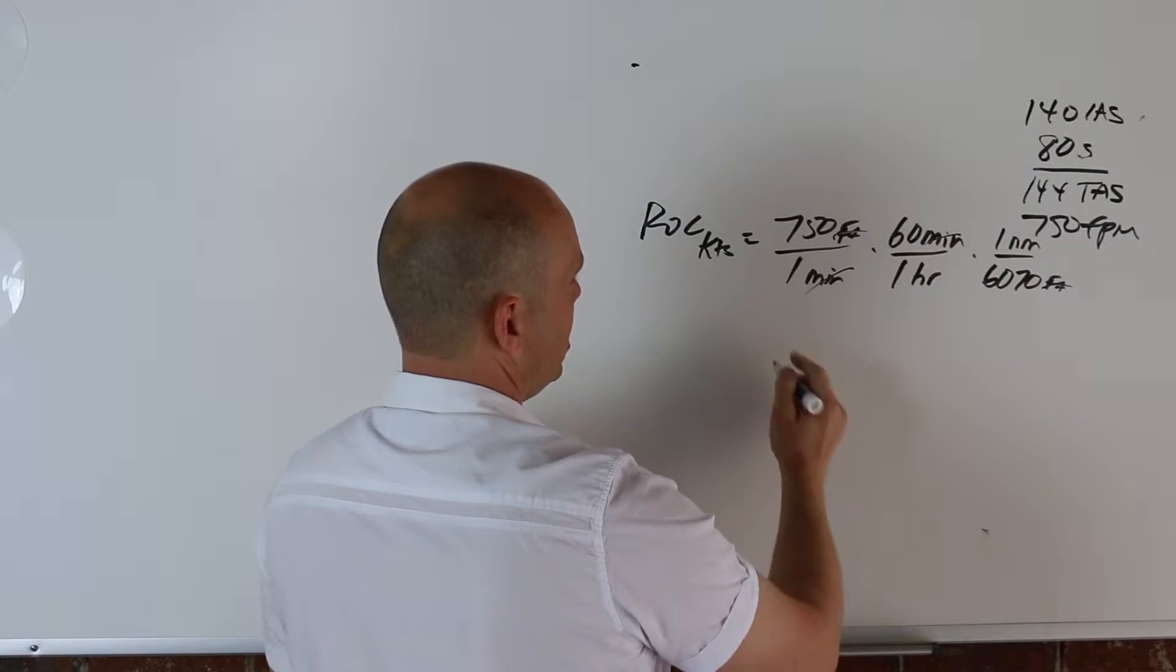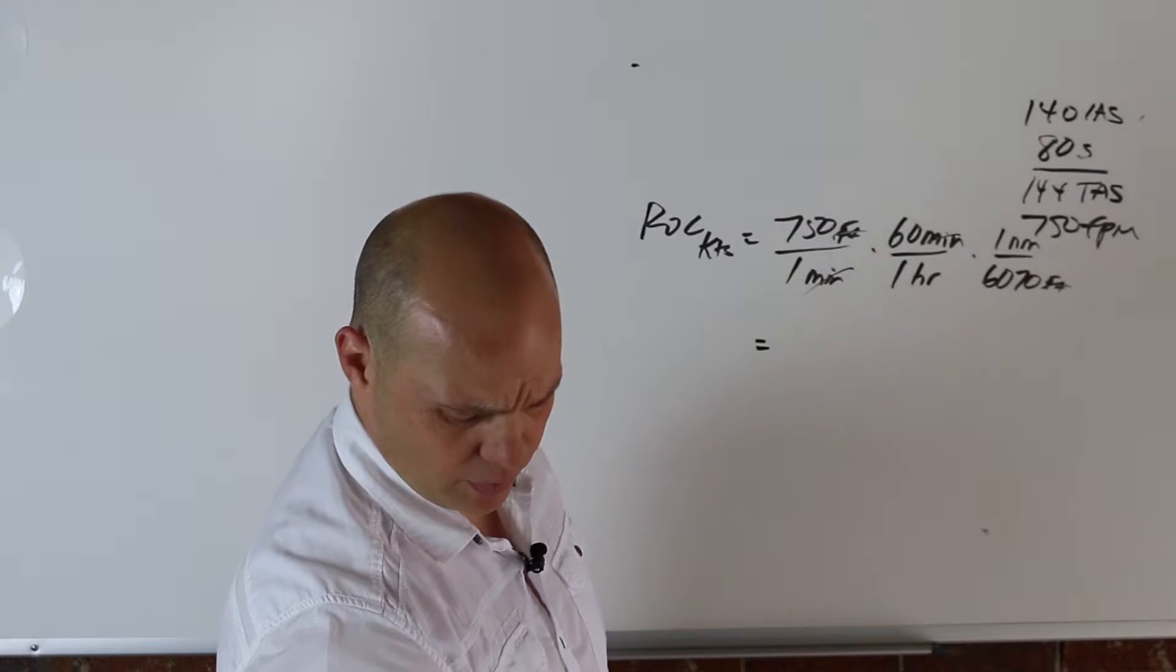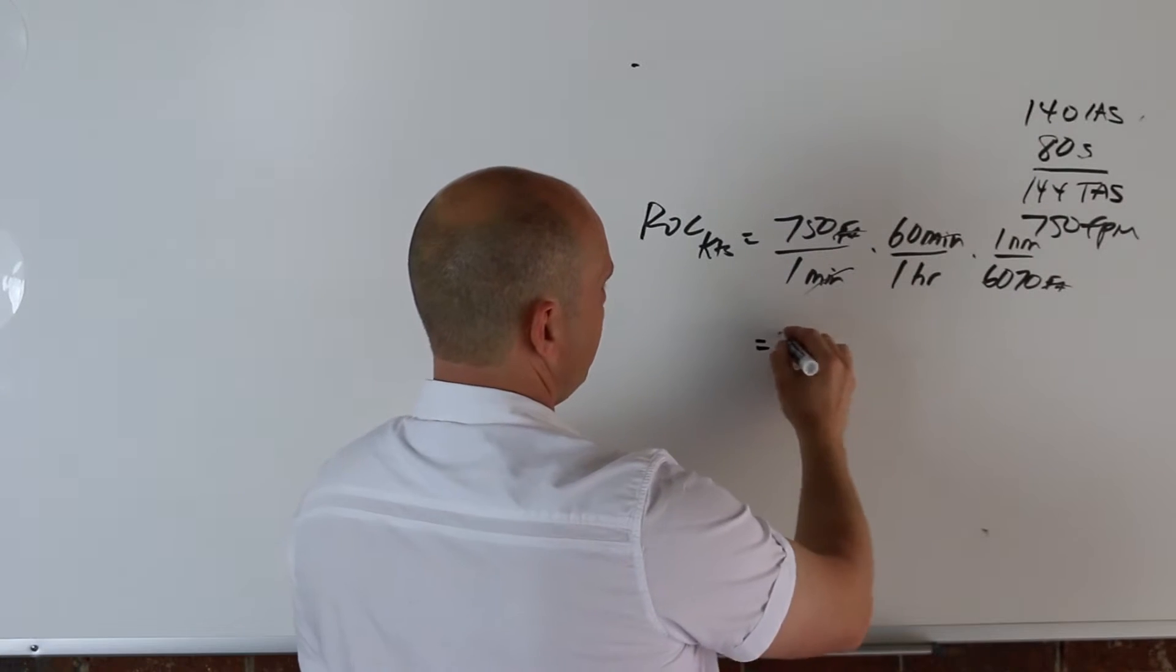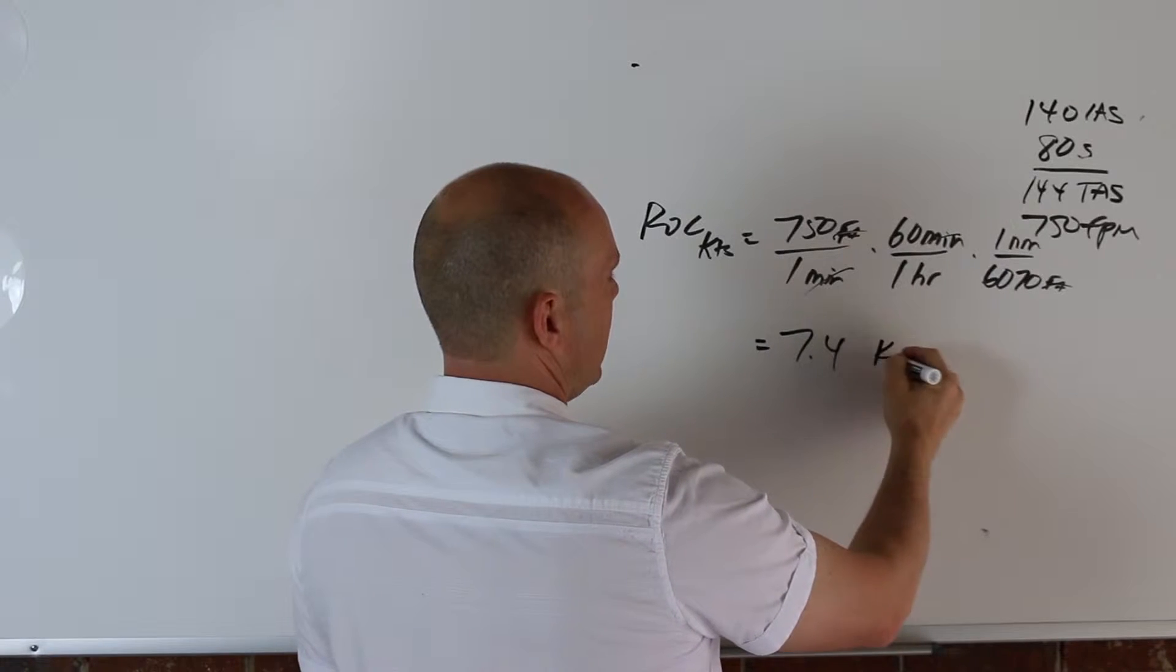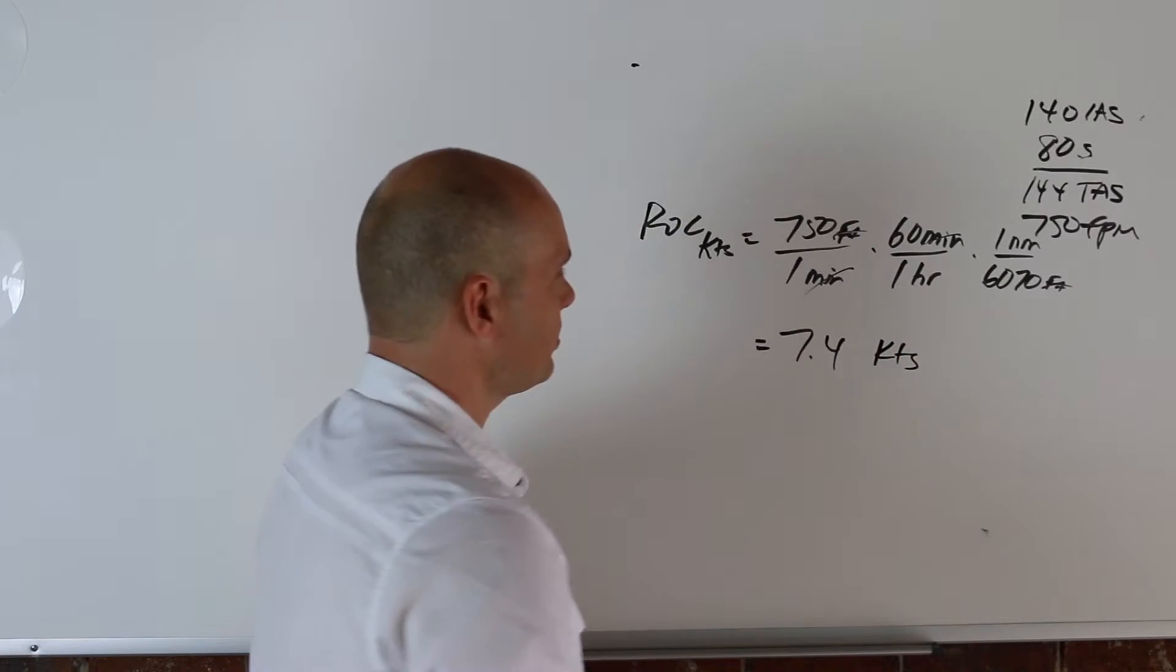Do the math across here, and you end up with 7.4 knots.